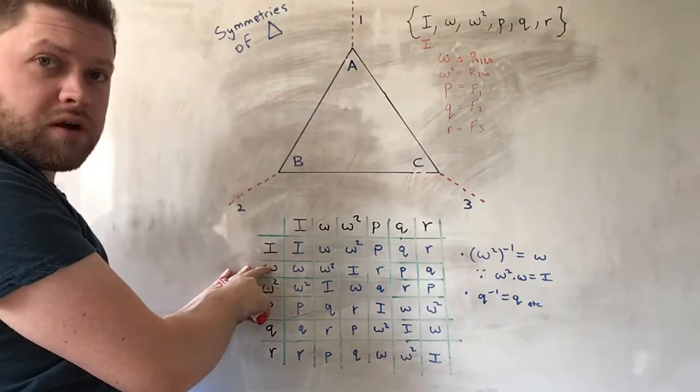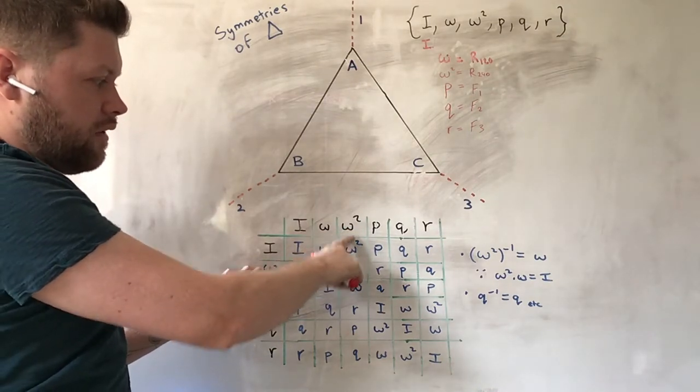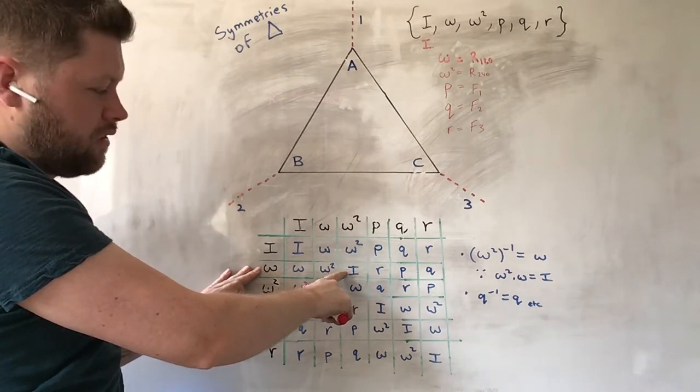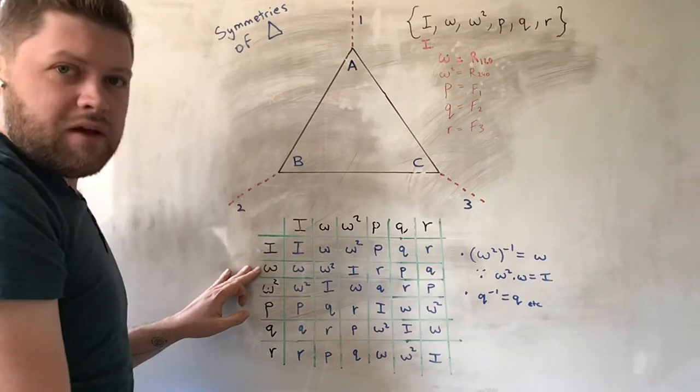If we do omega first, and then we do omega squared, that's back to where we started, so it's as if we did nothing. If we do omega and then P, what does that mean?